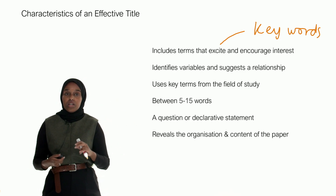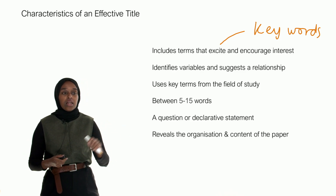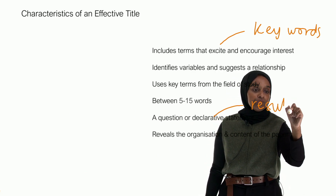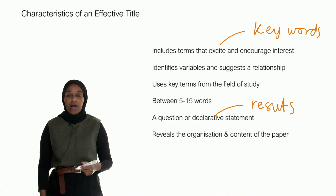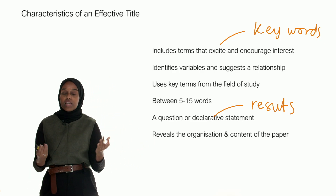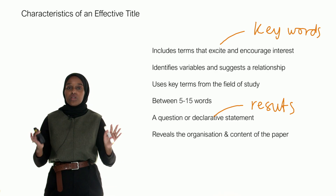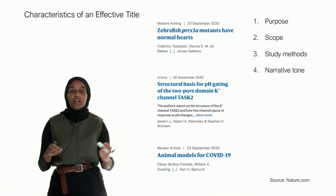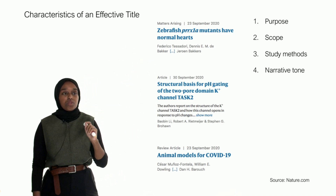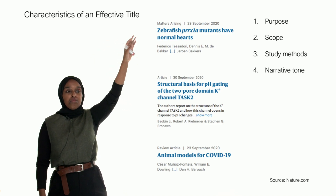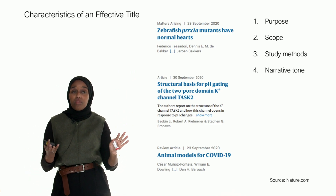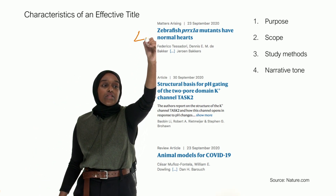An effective title is between 5 to 15 words — not too short, but not too long. It's a question or declarative statement, probably stating what the results are. It also reveals the organisation and content of the paper so that by looking at the title, you know what's inside. For example, from Nature: 'Zebrafish mutants have normal hearts' — that's a narrative tone. It states that zebrafish with a particular mutation have normal hearts; even before opening the paper, you know what's coming.